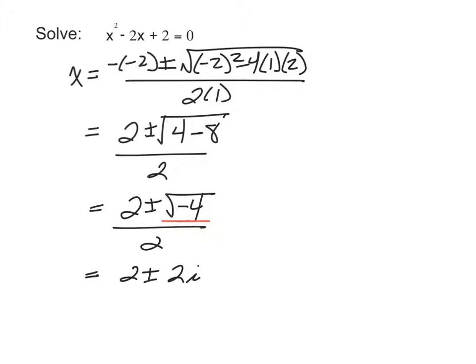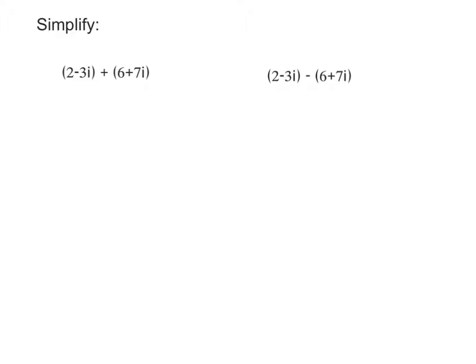Now we can finish simplifying this fraction by splitting it up into two fractions: 2 over 2 plus or minus 2I over 2. Then we have the real part is 1 and the imaginary part is 1I. And there we'll have our solution that involves I.